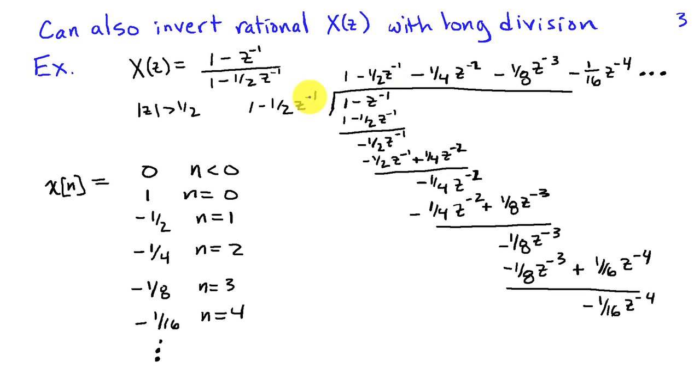And so I've got 1 minus Z inverse and what I'm dividing into that is 1 minus 1 half Z inverse. So my first term is 1.